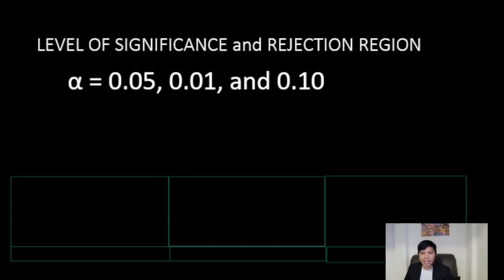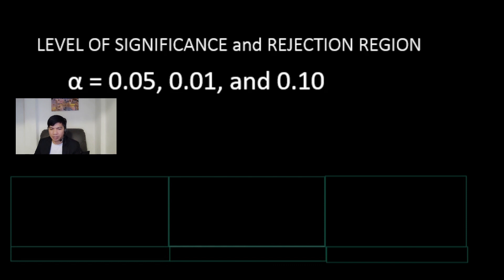In our case, we opted for a 95% confidence level as we are not operating within the medical field, corresponding to α equals 0.05.